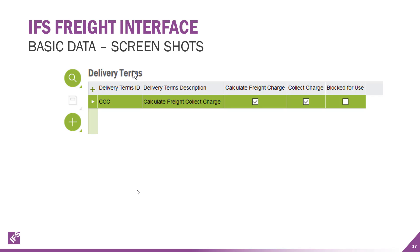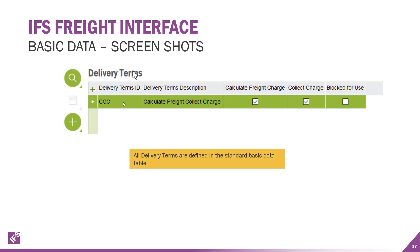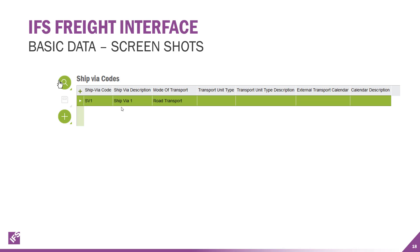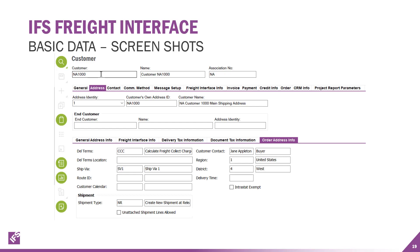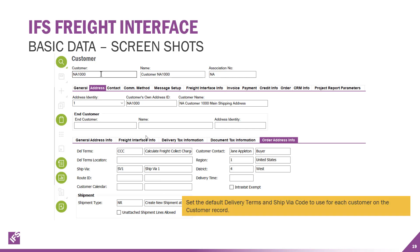Delivery terms are another basic data setup where you can calculate the freight charge and collect the charge. In Apps 10, we also utilize the block-for-use functionality. There are ship via codes with additional basic data that needs to be set up. You enter this information in your normal customer order address info, making sure you have the right delivery terms and ship via. These can be set up on the customer, so when you use that particular address ID for that customer, it will automatically pull in the right information, but you can also change these at the actual customer order level.